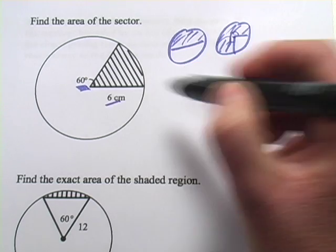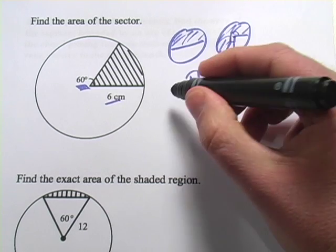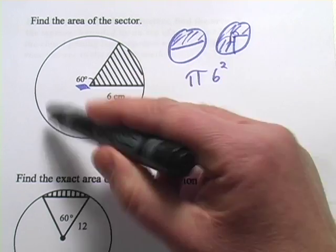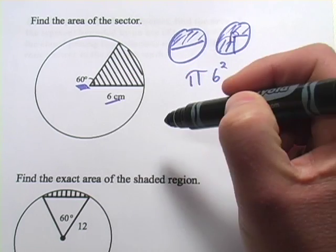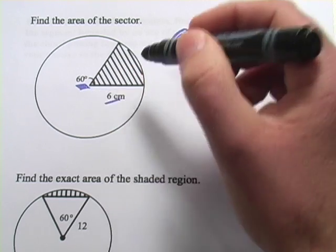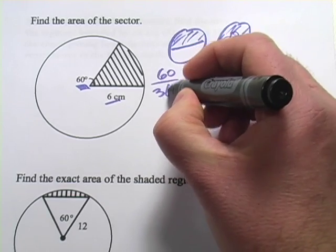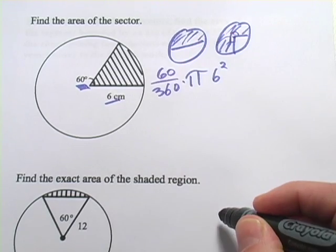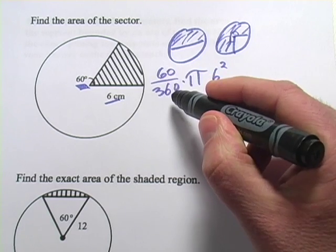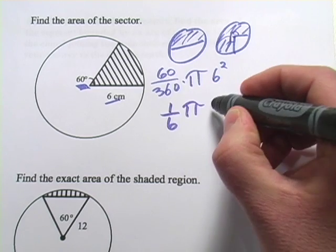The area of the circle here is no problem. We see our radius is 6 centimeters, so the area of this circle would be pi times the radius squared — pi times 6 squared. What's the fraction of this circle represented by this sector? Since the central angle is 60 degrees and there are 360 degrees in a circle, this is 60 out of 360, and we multiply that by pi times radius squared. 60 over 360 is the same as one-sixth, and we've got pi times 36.